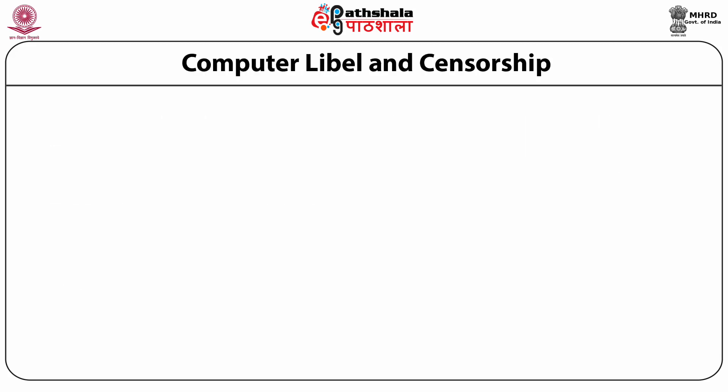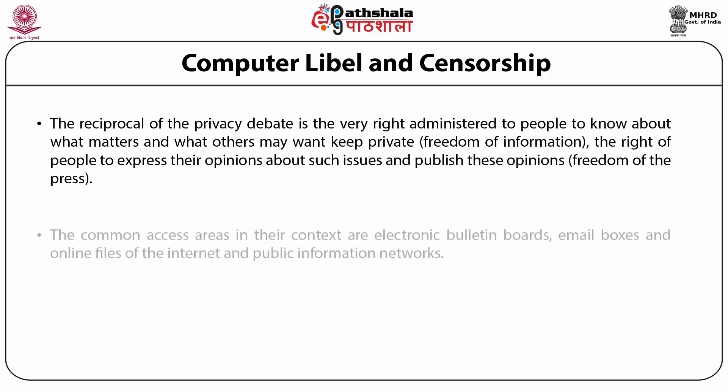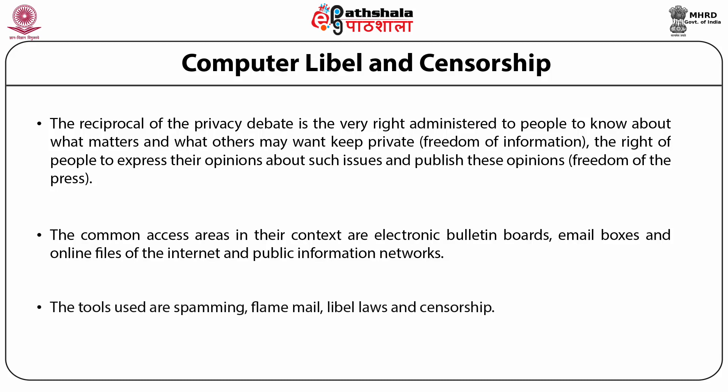We now look at computer libel and censorship. The reciprocal of the privacy debate is the right administered to people to know about what matters, or what they may want to keep private — which refers to the freedom of information — and the right to express opinions and publish them, such as freedom of the press. The common access areas are electronic bulletin boards, email boxes, online files on the internet, and public information networks. The tools used are spamming, flame mail, libel laws, and censorship.